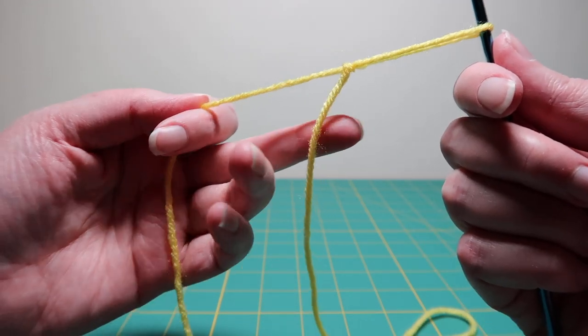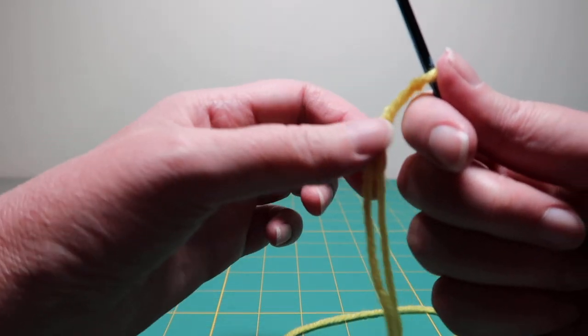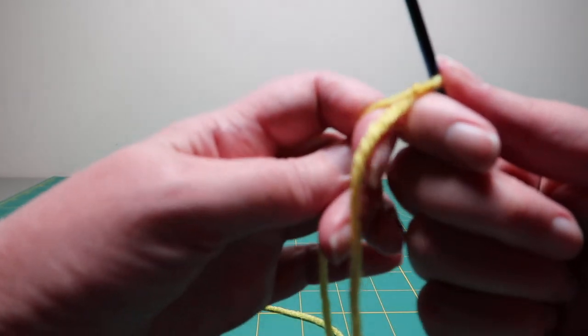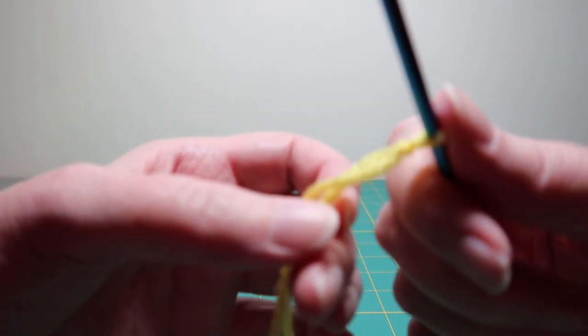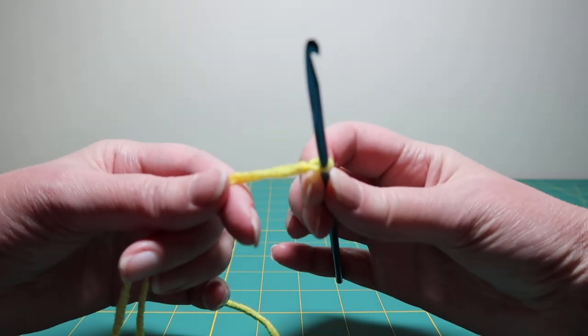And then if you pull the tail, the hole gets bigger. If you pull the working yarn, the loop on the hook gets smaller. So you don't want to have it too tight when you first start. About like that is good.